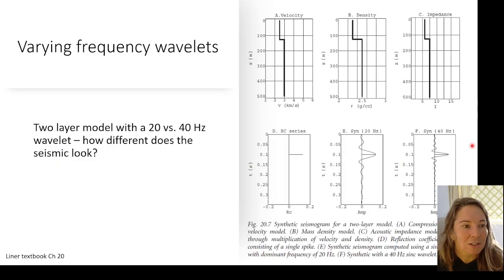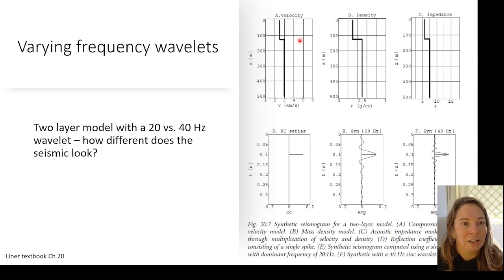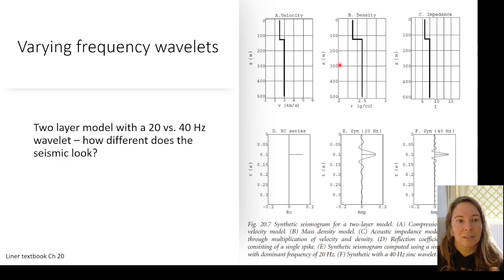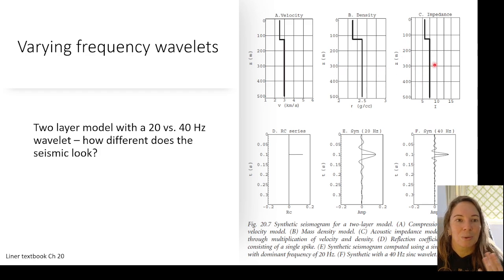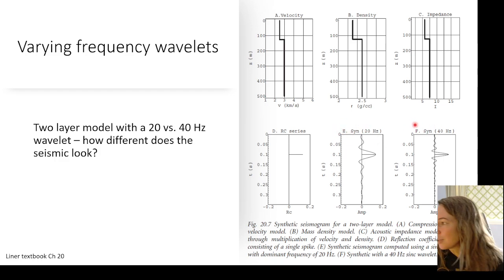These are some great examples from Chris Leiner's textbook. He's showing a two-layer model where the upper layer has a slightly lower velocity and lower density than the lower layer, giving a lower acoustic impedance and a positive reflection coefficient. With a peak frequency of 20 hertz, this is what our seismic wave looks like. With a higher frequency around 40 hertz, we see something more defined.